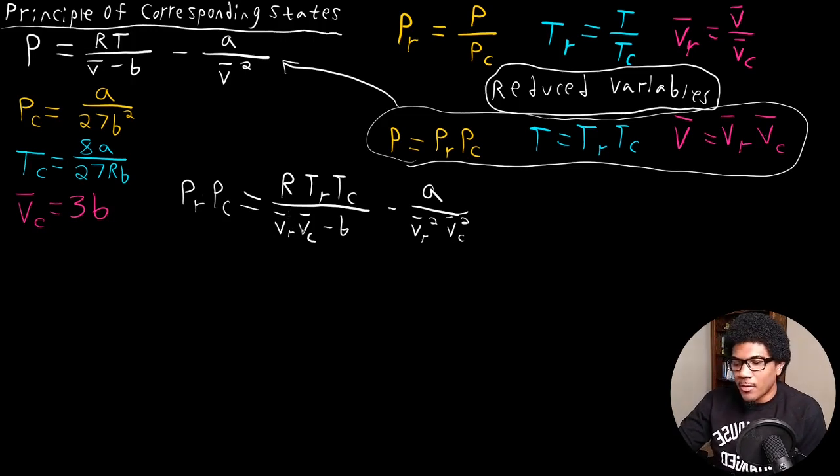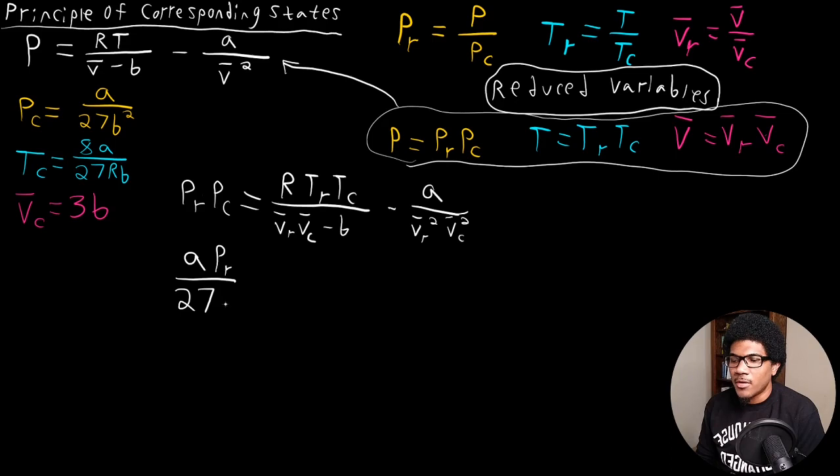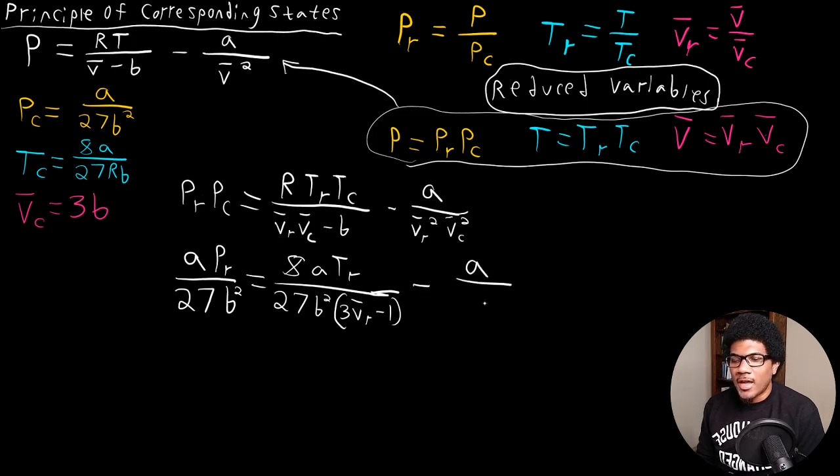So if we plug all of those in, we end up on the left-hand side with A times PR. So we don't really have an expression for PR, TR, or VR yet. But we'll get a very interesting relationship when we plug all of this stuff in. So first term here will be 8A. So we'll have 8A TR over 27B squared 3 VR minus 1. So I've plugged everything in, but I've also done a little bit of algebra here as well. Then we get A over 9B squared VR squared.